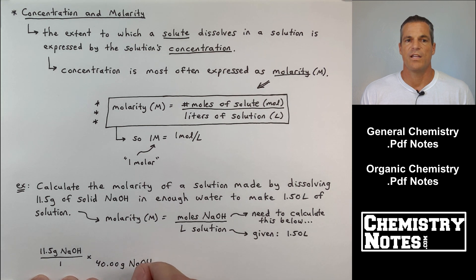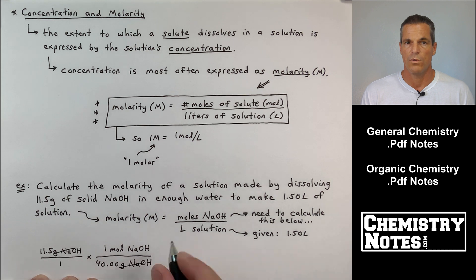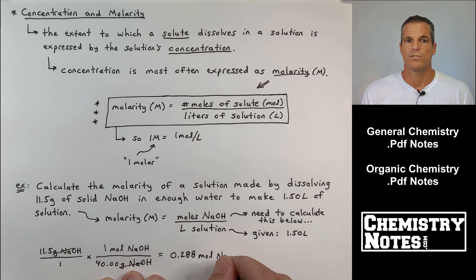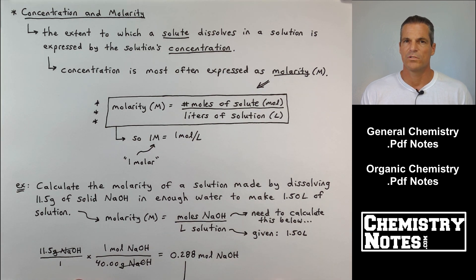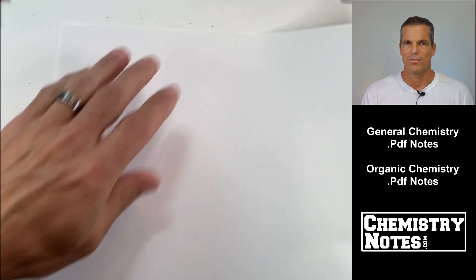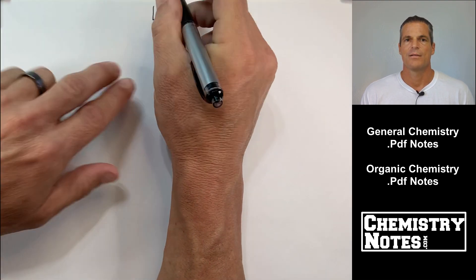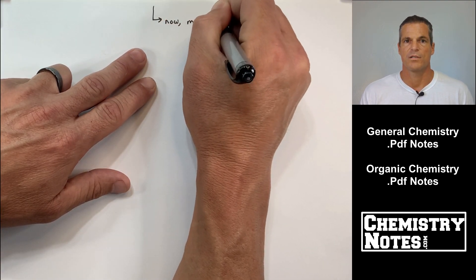11.5 grams of NaOH. Start with what we're given, put it over one. We get from grams to moles in one step by dividing by the molar mass, 0.288 moles of NaOH. So this is moles of NaOH. This isn't molarity. We're only halfway there. That was the numerator for the molarity equation.